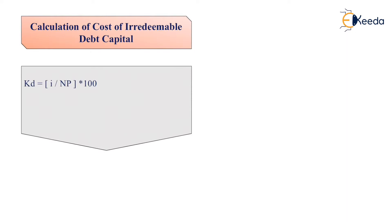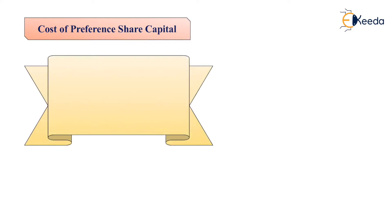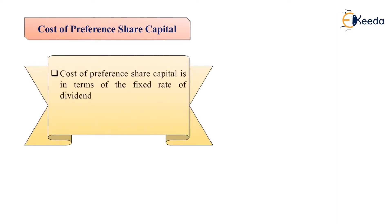For the calculation of cost of irredeemable debenture capital, the formula is simple: Kd equals I divided by NP, where NP is net proceeds and I is interest.